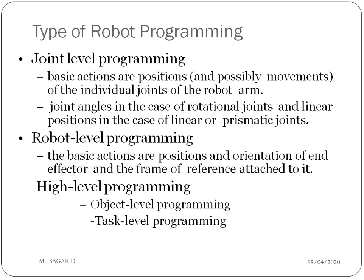Robo programming is broadly divided into three main types: joint level programming, which is related to the joints; robot level programming; and high level programming. High level programming is further subdivided into object level programming and task level programming. We will discuss each one by one. Joint level programming: the basic actions are position — meaning movements of individual joints of the robotic arm.